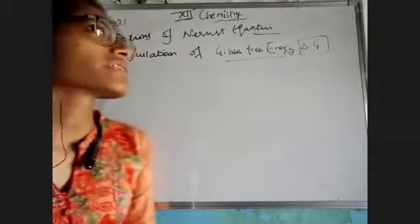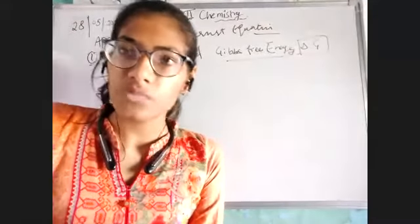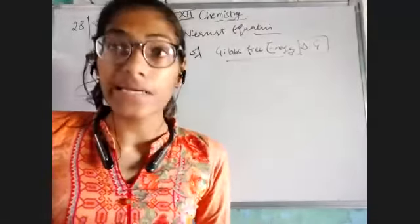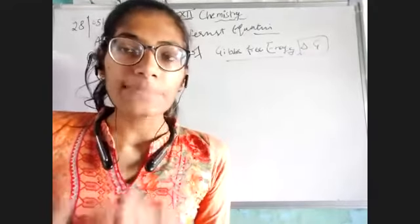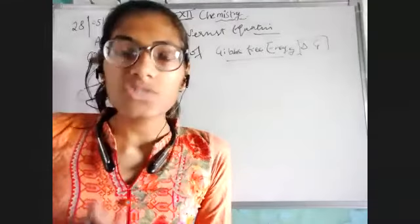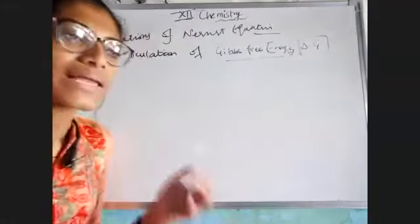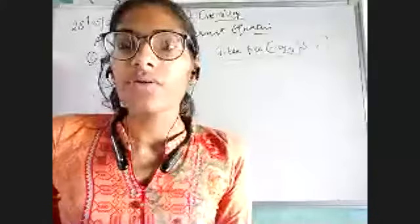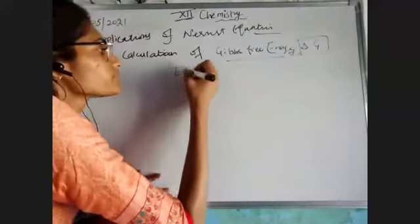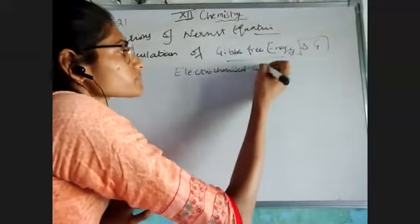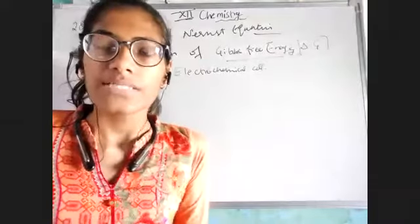In 11th class, in chapter 6 — thermodynamics — you studied what is Gibbs free energy and internal energy. You know very well that Gibbs free energy relates with work done. Here I want to say, whenever a reaction takes place in an electrochemical cell — for example zinc and copper reacting — the chemical reaction converts to make zinc sulfate plus copper. What happens when my electrochemical cell is working and the chemical reaction is taking place?